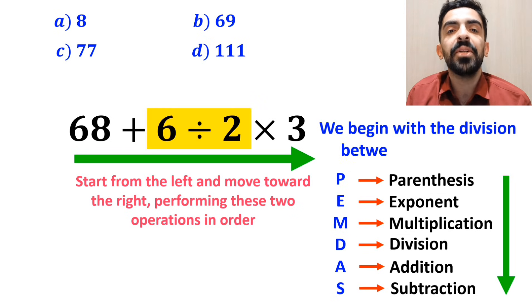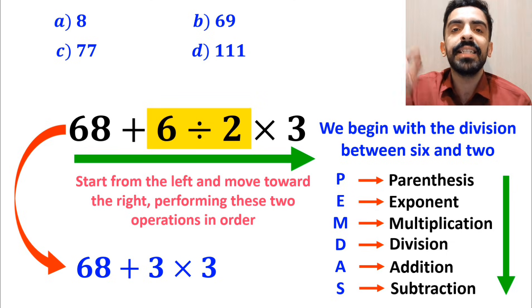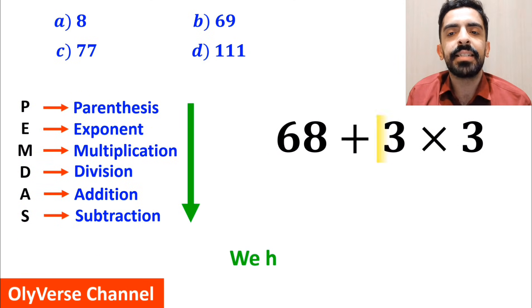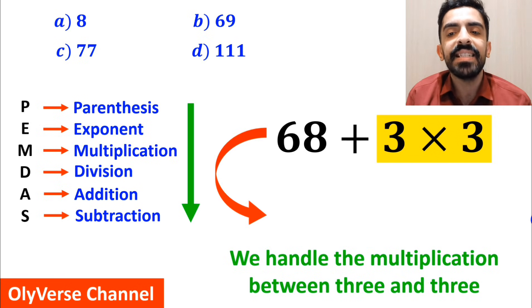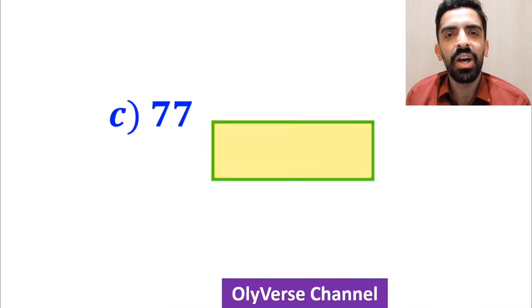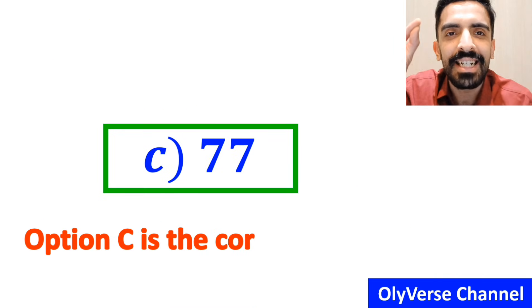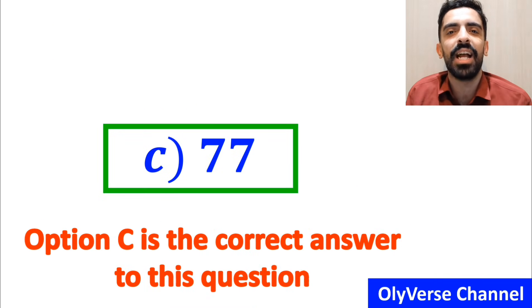We begin with the division between 6 and 2. Instead of this expression, we can write 68 + 3 × 3. In the final step, we handle the multiplication between 3 and 3. This expression simplifies to 68 + 9, which finally gives us the answer 77. Therefore, option C is the correct answer to this question.